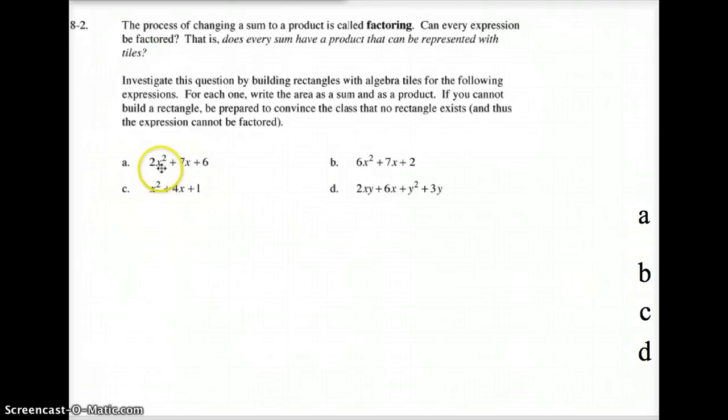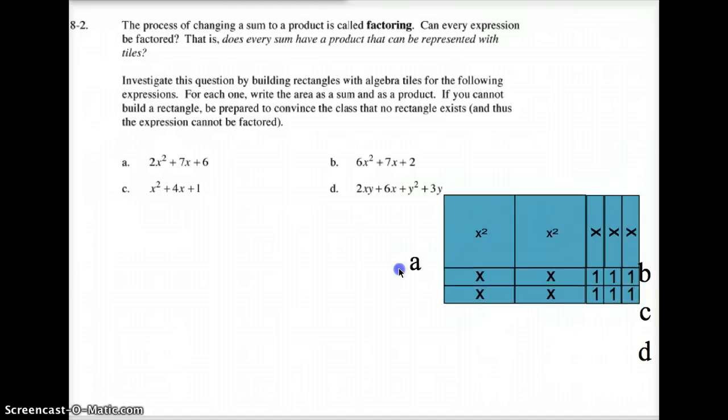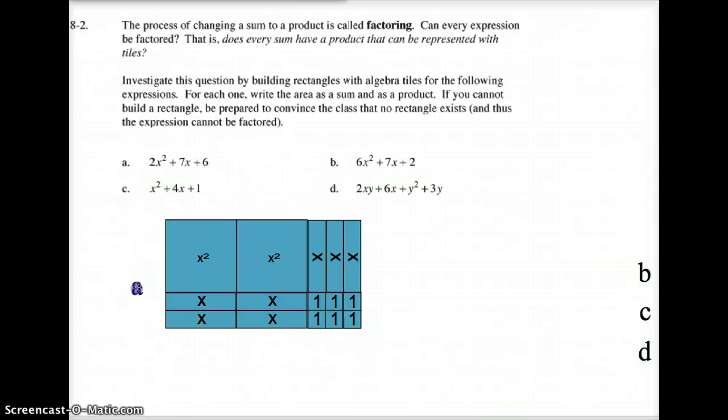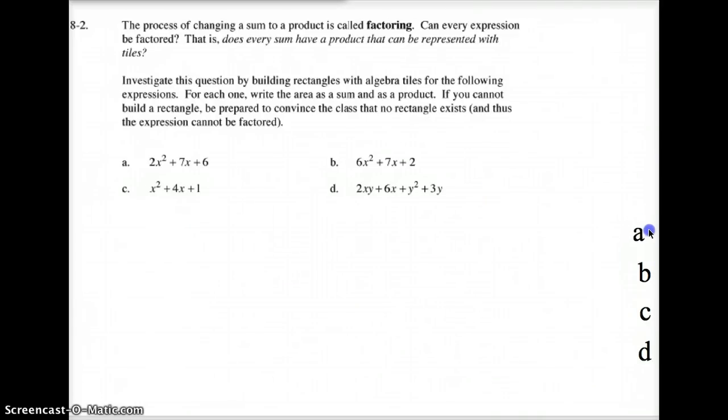Letter A. I need 2X squared tiles. I need 7X tiles. And I need 6 unit tiles. And then I've got to play around with those until I can make a perfect rectangle. You might notice for letter A, here's my 2X squared tiles, my 7X tiles, and my 6 unit tiles. So what I'd like you to do is pause the video, and don't spend more than maybe 4 or 5 minutes trying to do this on your own. Make a rectangle out of B, make a rectangle out of C, and make a rectangle out of D. Go ahead and pause it.